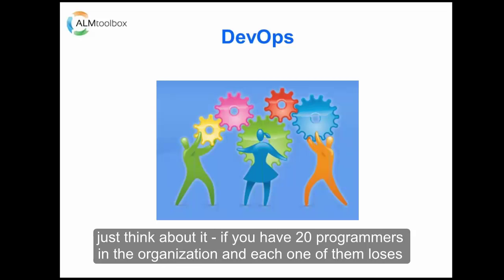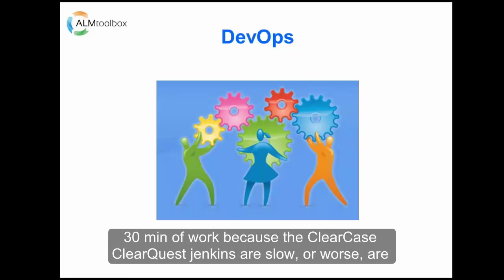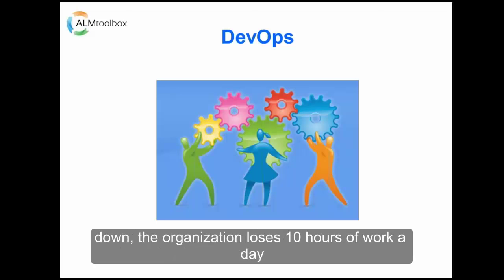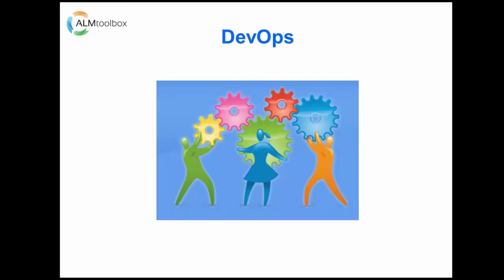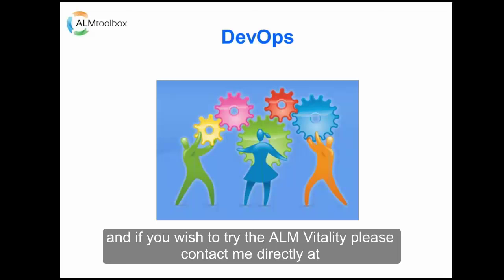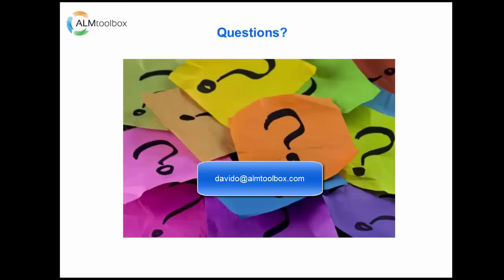Just think about it: if you have 20 programmers in the organization and each one of them loses 30 minutes of work a day because ClearCase, ClearQuest, or Jenkins are slow or, worse, are down, the organization loses 10 hours of work a day. If you wish to try ALM Vitality, please contact me directly at davido@almtoolbox.com.